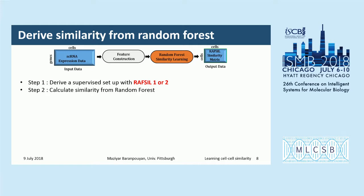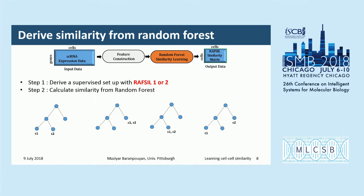Once the random forests are extracted, we calculate similarity from them. For example, assume a random forest with four decision trees. The similarity between two cells C1 and C2 is calculated as the number of terminal nodes containing both C1 and C2, divided by the total number of decision trees. In this example, the similarity between C1 and C2 is 2 divided by 4.